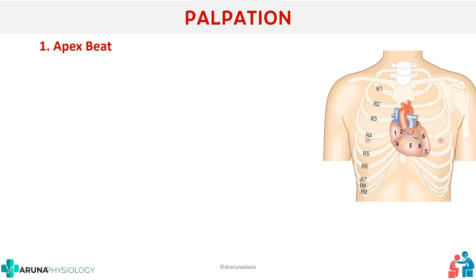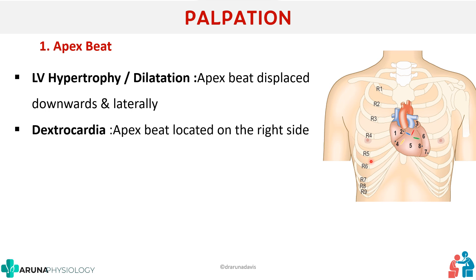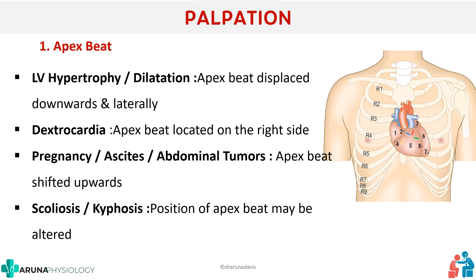There are other conditions as well. In left ventricular hypertrophy, the apex beat is displaced downwards and laterally — it can go up to the sixth intercostal space or move downward as well as laterally. In dextrocardia, the apex beat is located on the right side. Conditions like pregnancy, ascites, and abdominal tumours can shift the apex beat upwards, and structural diseases like scoliosis and kyphosis can also alter its position. So don't assume the apex beat will always be in the fifth intercostal space.